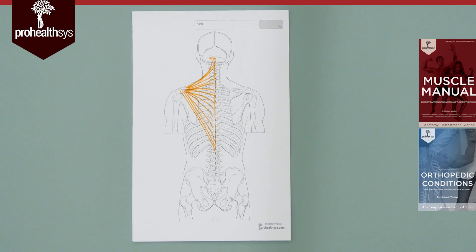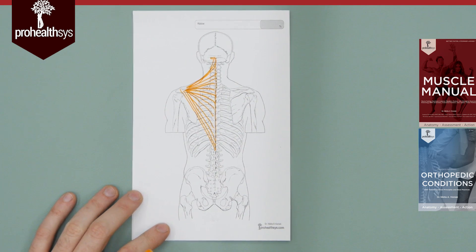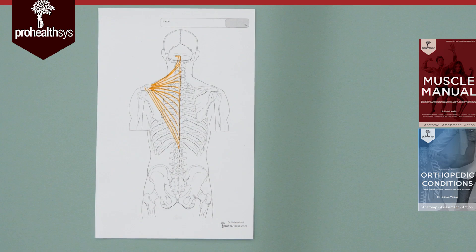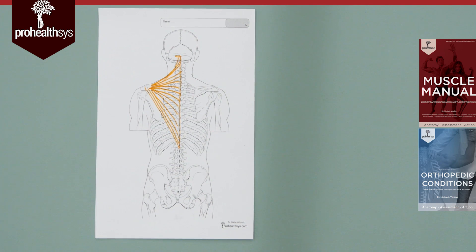What are the actions for trapezius? By far and away, its two main actions are elevation of the scapula and retraction of the scapula bilaterally. But if your scapulae stay where they are, it performs extension of the neck if you're in a prone position. So that's trapezius.